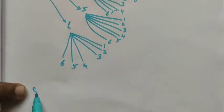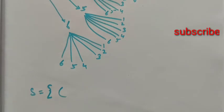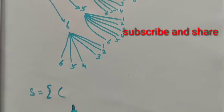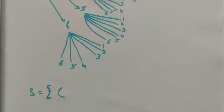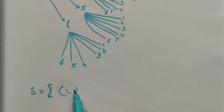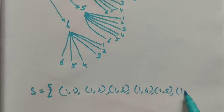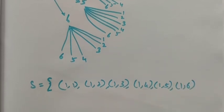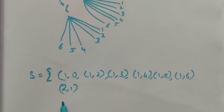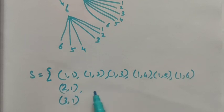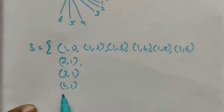The sample space S equals: (1,1), (1,2), (1,3), (1,4), (1,5), (1,6), then (2,1), (2,2), continuing through (3,1), (4,1), (5,1), (6,1), and so on, all the way up to (6,6). This is the sample space of selecting 2 balls from a bag.